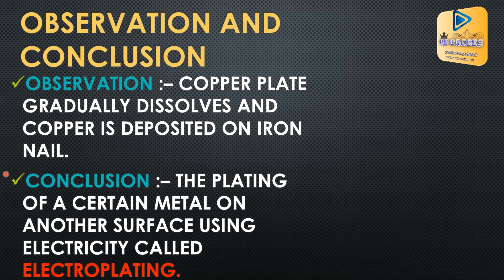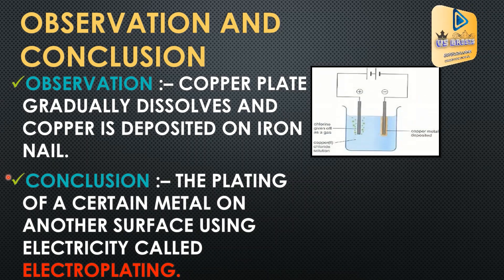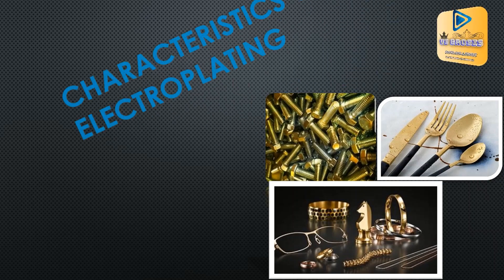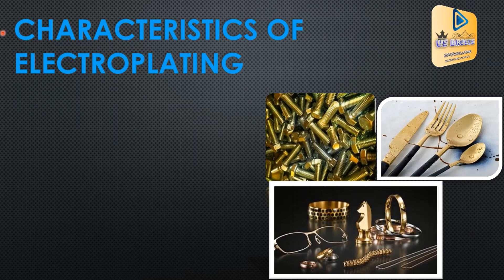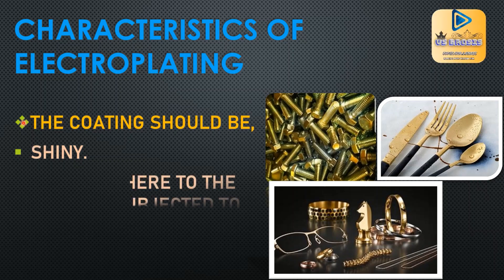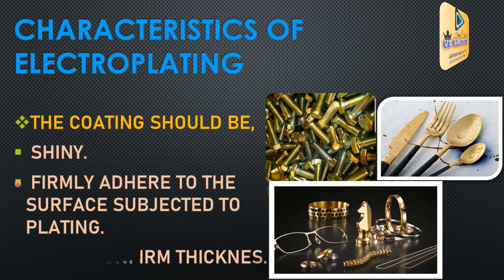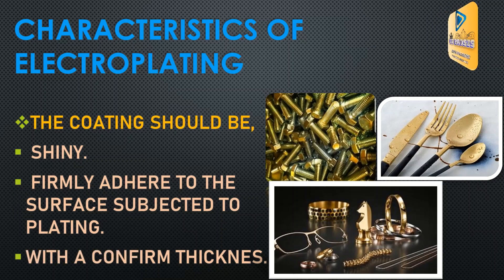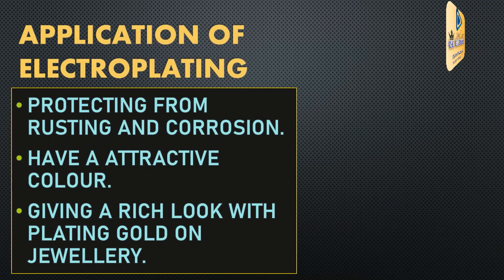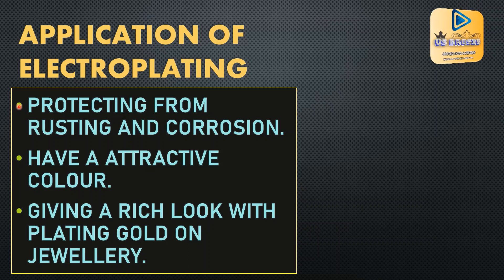You can conclude that electroplating is the plating of a certain metal onto another surface using electricity. The coating should be shiny and firmly adhered to the surface with a uniform thickness. Characteristics of electroplating include protecting from rusting and corrosion, having attractive colors, and giving a rich look with quality plating.